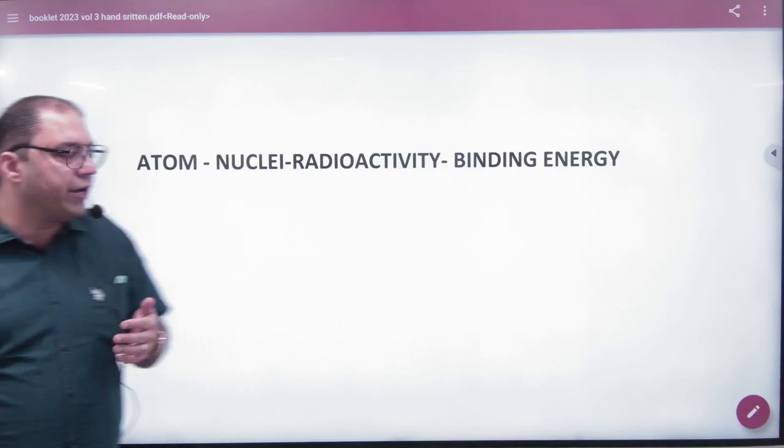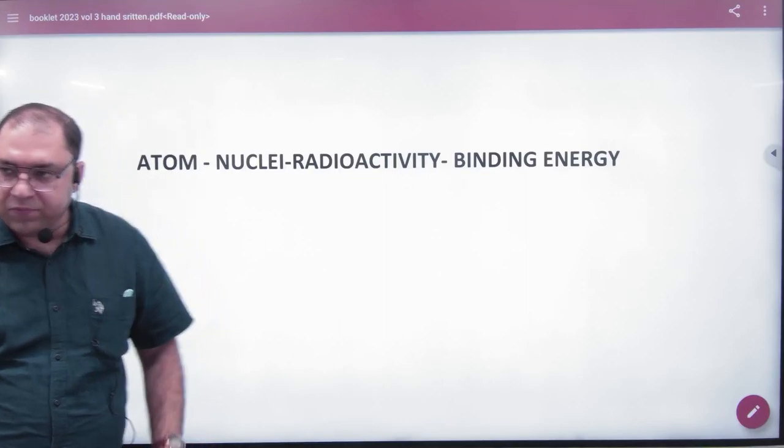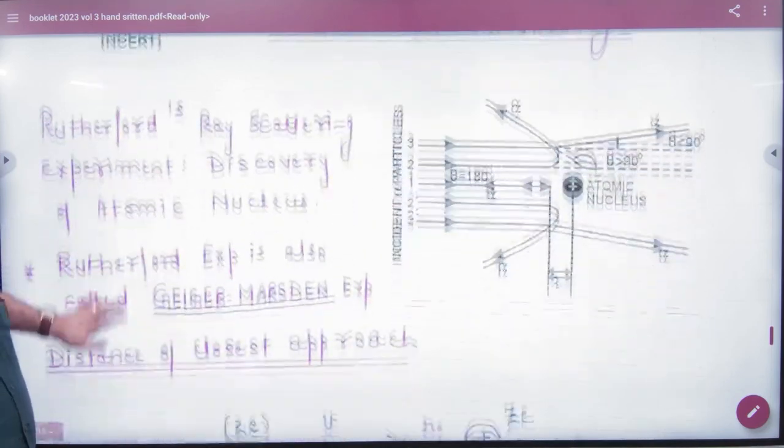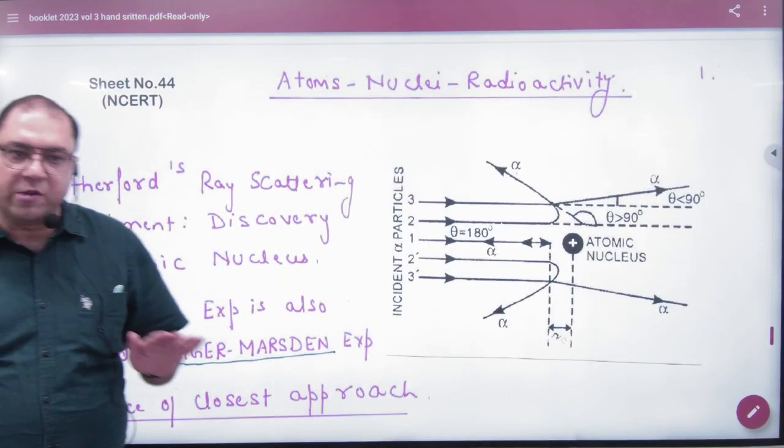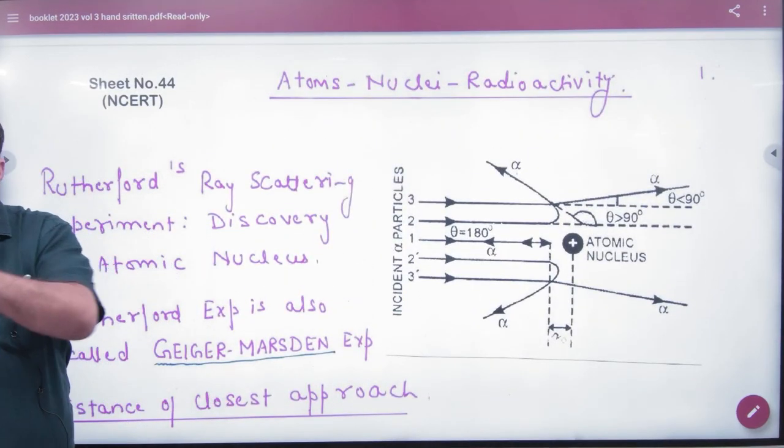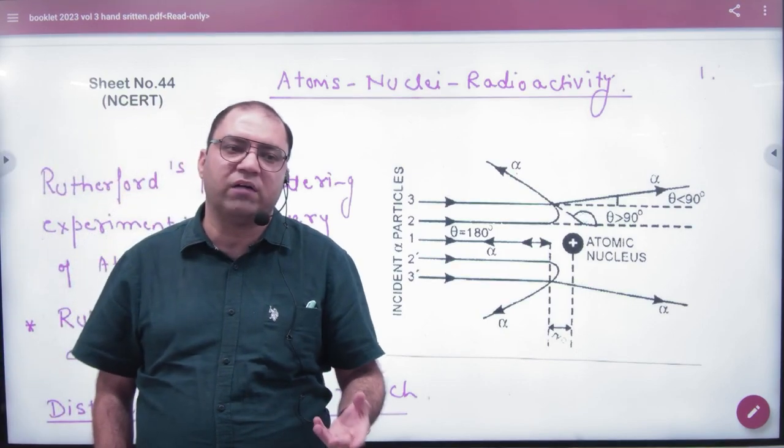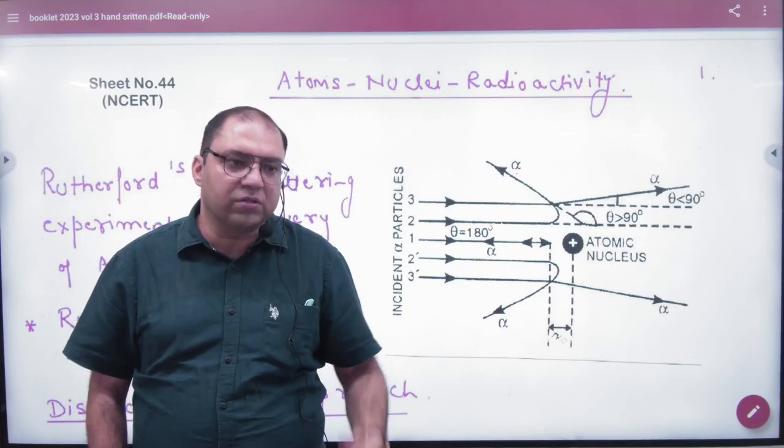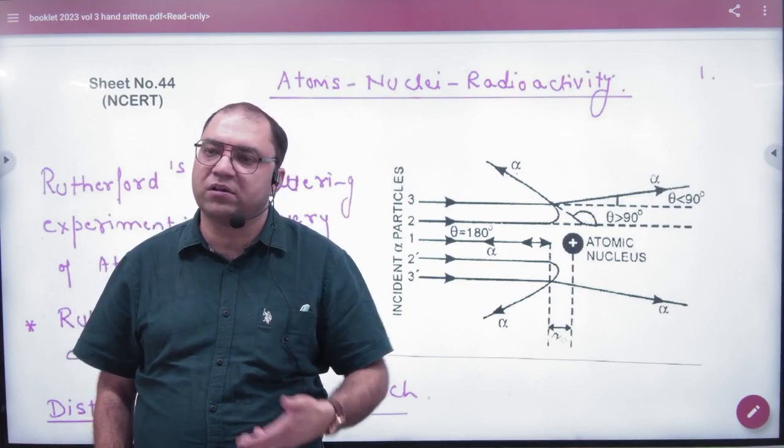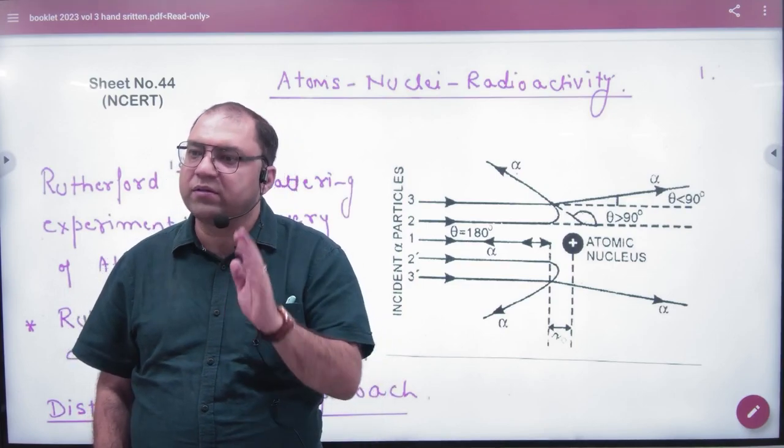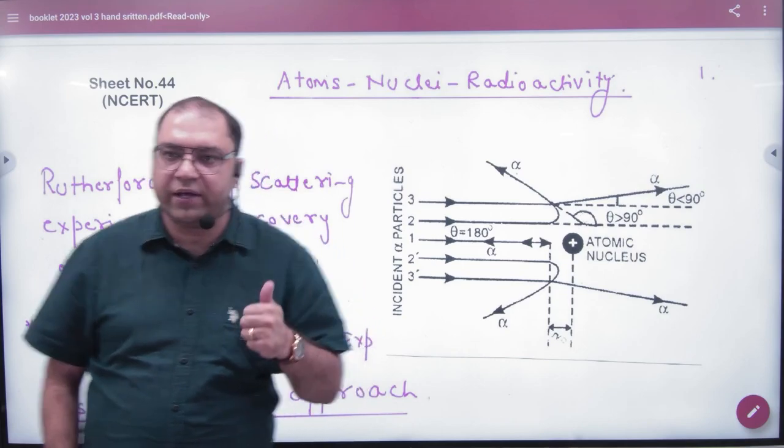In Atom, Nucleus, Radioactivity and Binding Energy. This chapter starts with Rutherford's experiments. So if we talk about what was the first model, the first one was Thomson's model where positive and negative charges were distributed. I didn't know anything about the nucleus. So what happened after that?